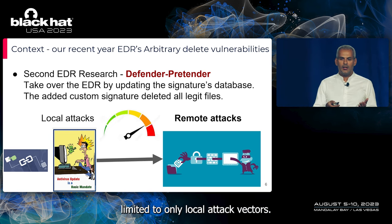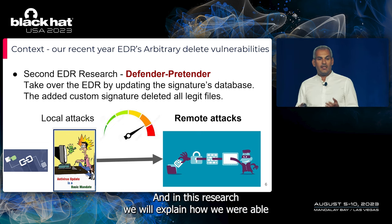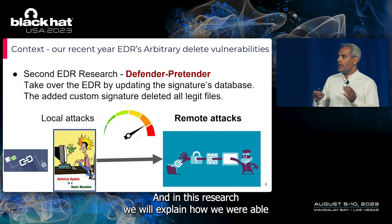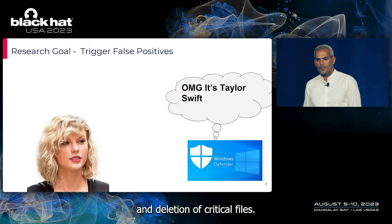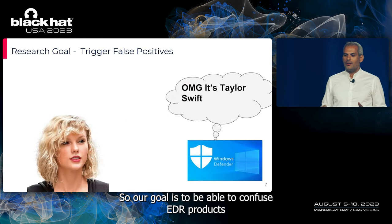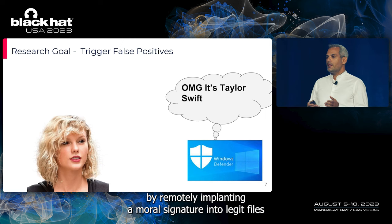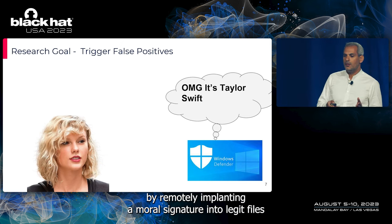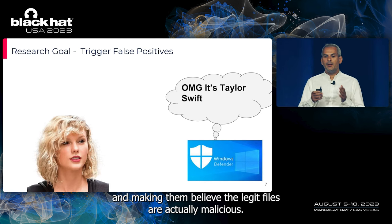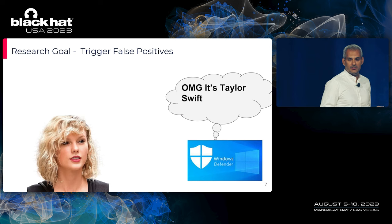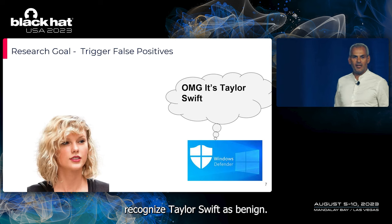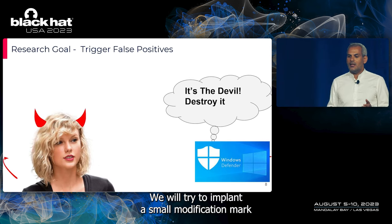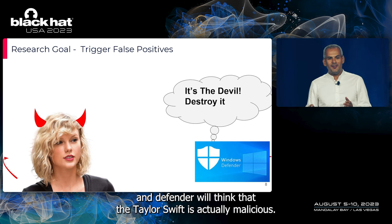Although those vulnerabilities are impressive, they are limited to only local attack vectors. In this research we will explain how we were able to discover remote attack vectors and deletion of critical files. Our goal is to confuse EDR products by remotely implanting a malware signature into legitimate files, making them believe the legit files are actually malicious. As an analogy: Defender usually recognizes Taylor Swift as benign — we will try to implant a small modification so Defender thinks Taylor Swift is actually malicious and does its best to eliminate it.